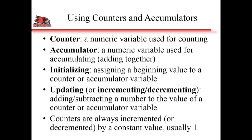Once you start the loop, you have to update the value of these variables — the counters and accumulators. If you're incrementing, that means you're adding to or making the variable bigger by some number. If you're decrementing, you're subtracting a number from the value of the counter or accumulator variable. Counters are special types of accumulators which are always incremented or decremented by a constant value — usually that constant value is one.